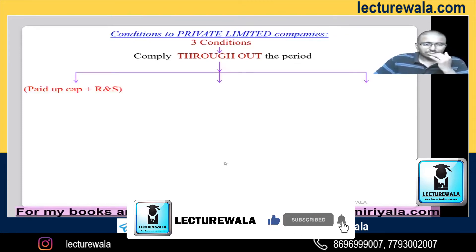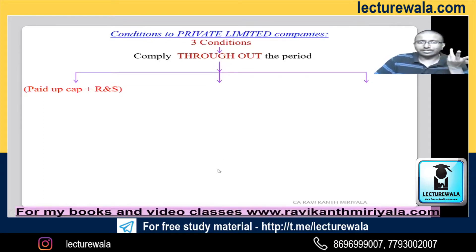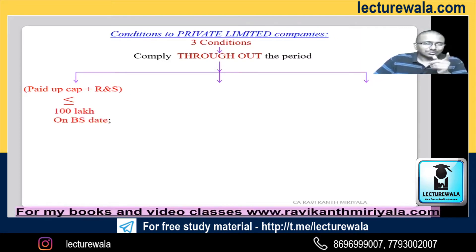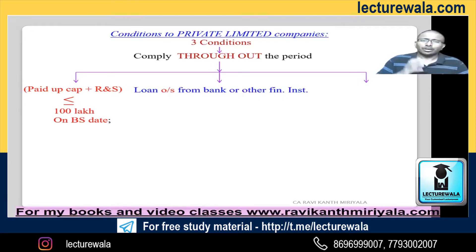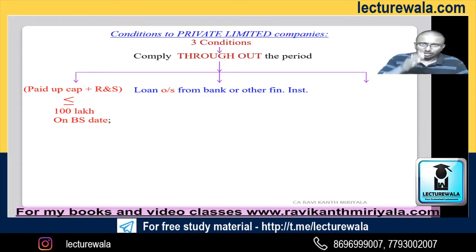What is the first condition? Paid-up capital plus reserves and surplus - shall I write less than or greater than? I said exemptions are applicable to small companies, so the number should be less than: less than 100 lakh rupees on the balance sheet date. So for paid-up capital and reserves and surplus you check on the balance sheet date specifically. Next, loans outstanding from banks or financial institutions - only from banks or financial institutions. Suppose there are creditors - no, that is not included. This is also less than or equal to 100 lakh.